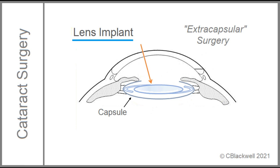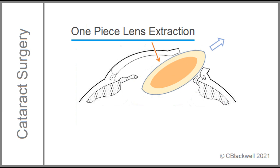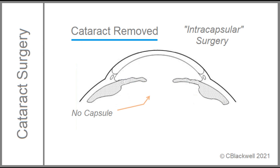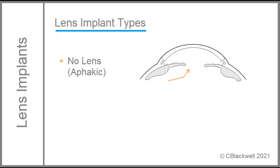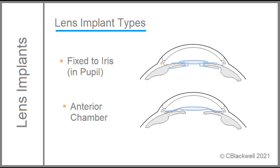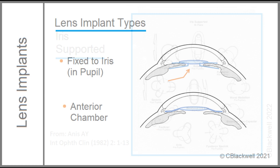So far, we have shown surgery that keeps the capsule — technically called extracapsular surgery. However, for many years, the standard cataract procedure involved extracting the lens in one whole piece, including the capsule. Called intracapsular surgery, this left no capsule to support the lens implant. We showed one example of this at the beginning, using a cryoprobe that sticks to the lens and allows it to be dragged out whole. There were other methods. So, where could an implant go with no capsule for support?